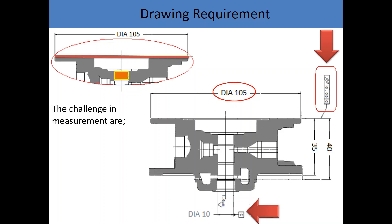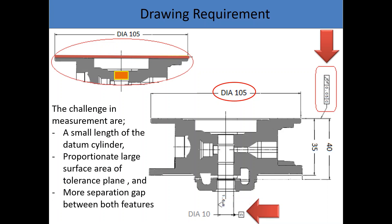The challenges in measurement are: a small length of the datum cylinder, proportionate large surface area of tolerance plane, and more separation gap between both features. From next slides we will understand how these parameters are affecting the measurement and correlation results.